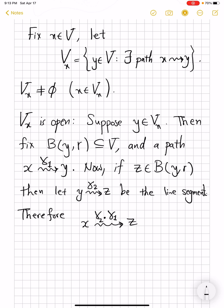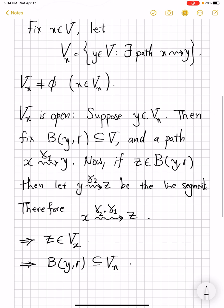This notation is sometimes used in algebraic topology. Which means that there is a path from x to z, and that means z belongs to Vₓ. This was for arbitrary z. That means the whole ball of radius yr is contained in Vₓ. And that ends the proof that Vₓ is actually open.